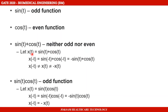Let x(t) = sin t + cos t. Replacing t with −t: x(−t) = sin(−t) + cos(−t) = −sin t + cos t. This is not equal to x(t), which is sin t + cos t. Also, it is not equal to minus x(t). So sin t + cos t is neither an odd function nor an even function.